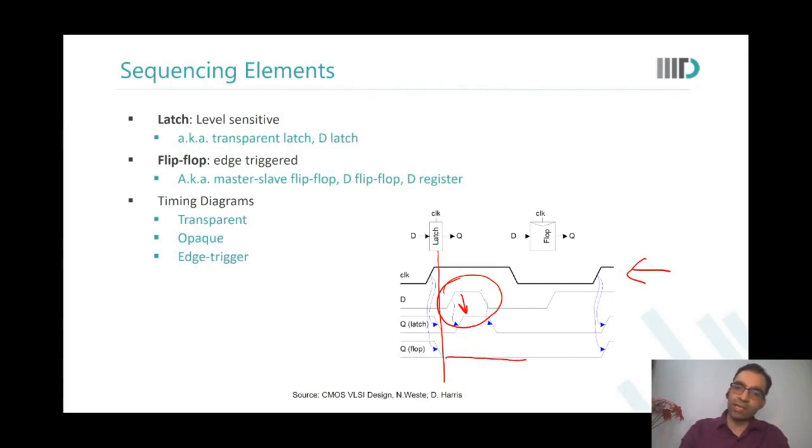Now data toggled again. Since at this point of time clock was low, even the latch was opaque, it was not transparent yet. When clock went high, both flop and the latch gave the right output, meaning they reflected D on Q.